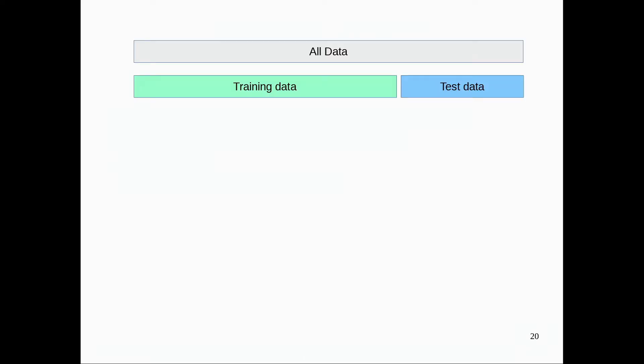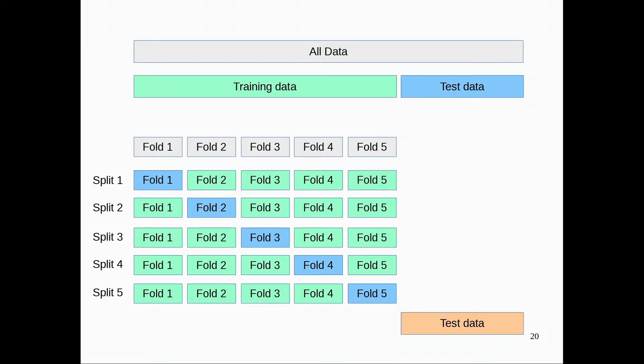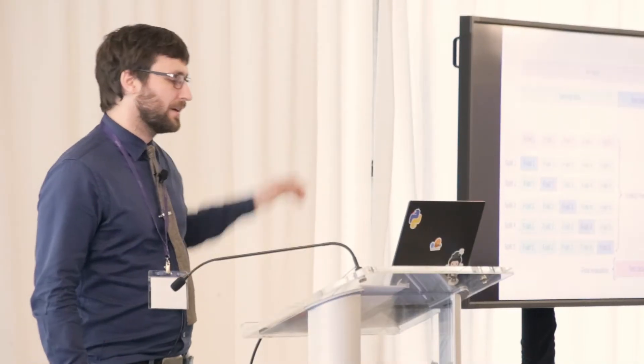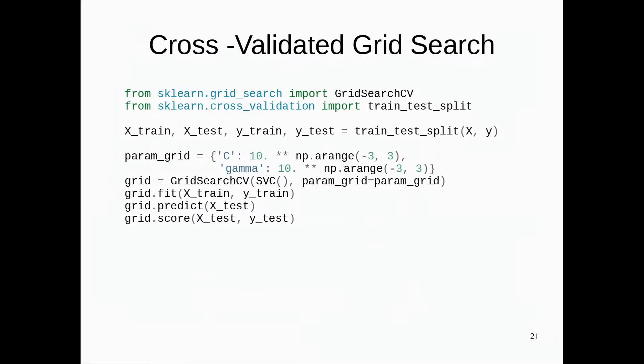Another tool that's probably used even more commonly is grid search to adjust parameters, because all models have parameters and you always need to tune them. The workflow I usually encourage is: take your data, do a training/test split, then do cross-validation on the training dataset to tune parameters, and then do final evaluation on your test data. This way you have an unbiased estimate of generalization performance. If you just did cross-validation to tune your parameters, the estimate would be too optimistic.